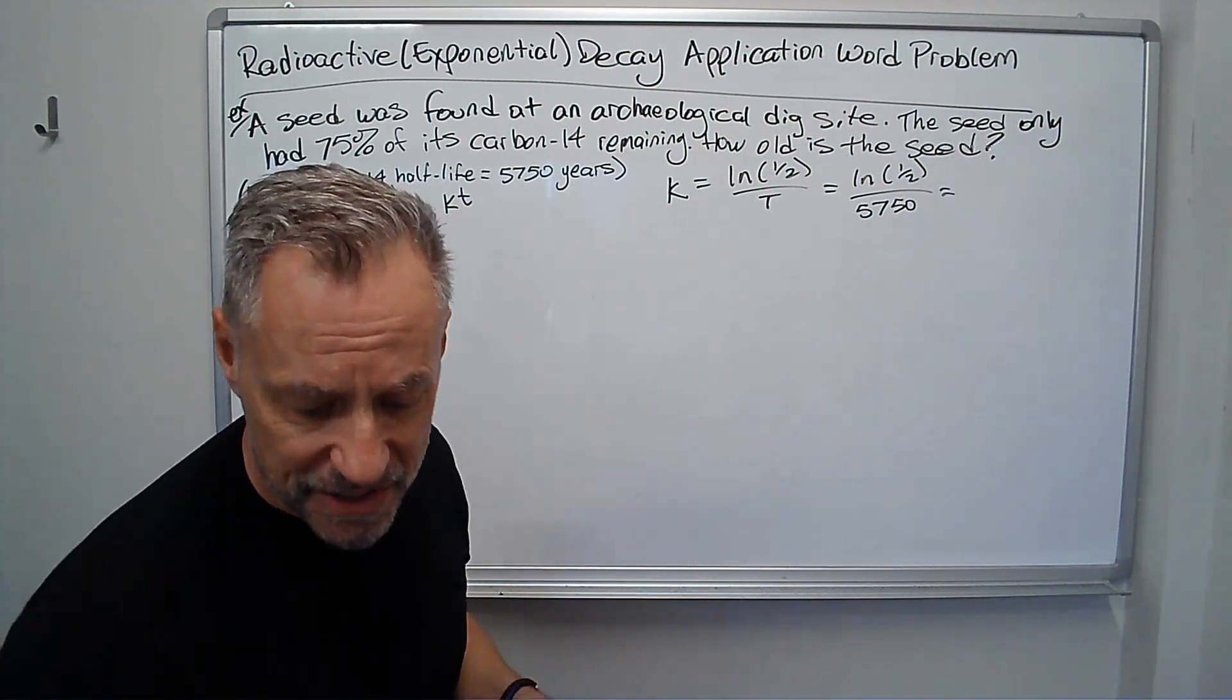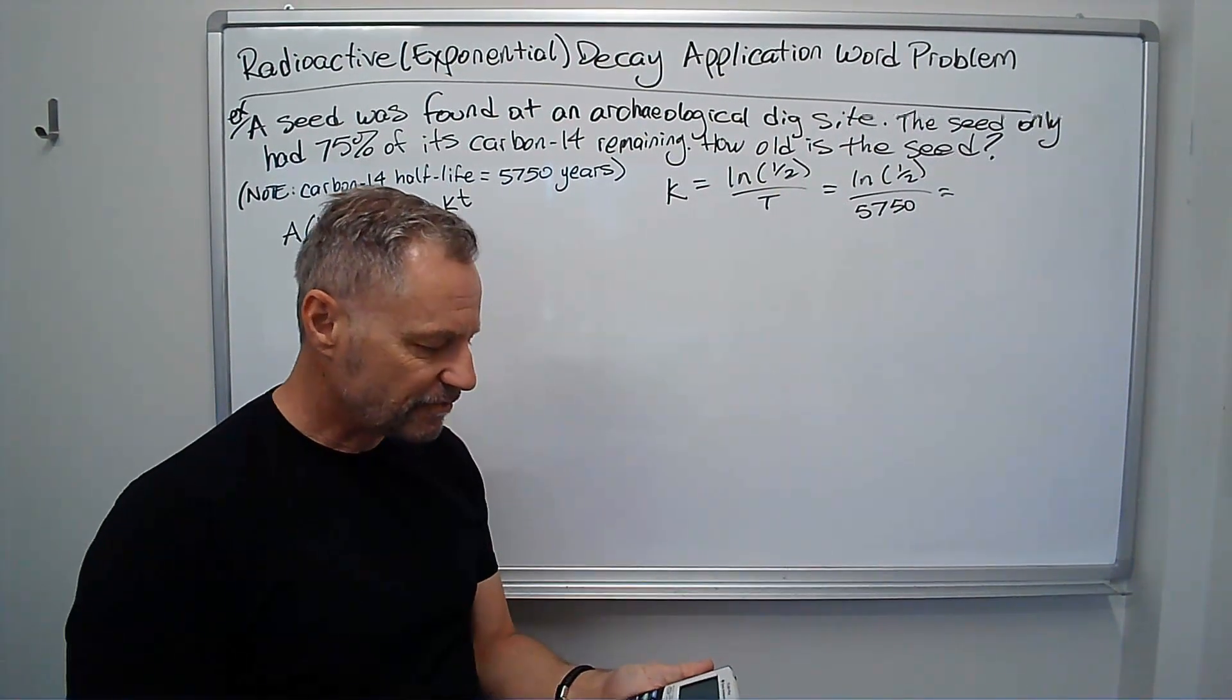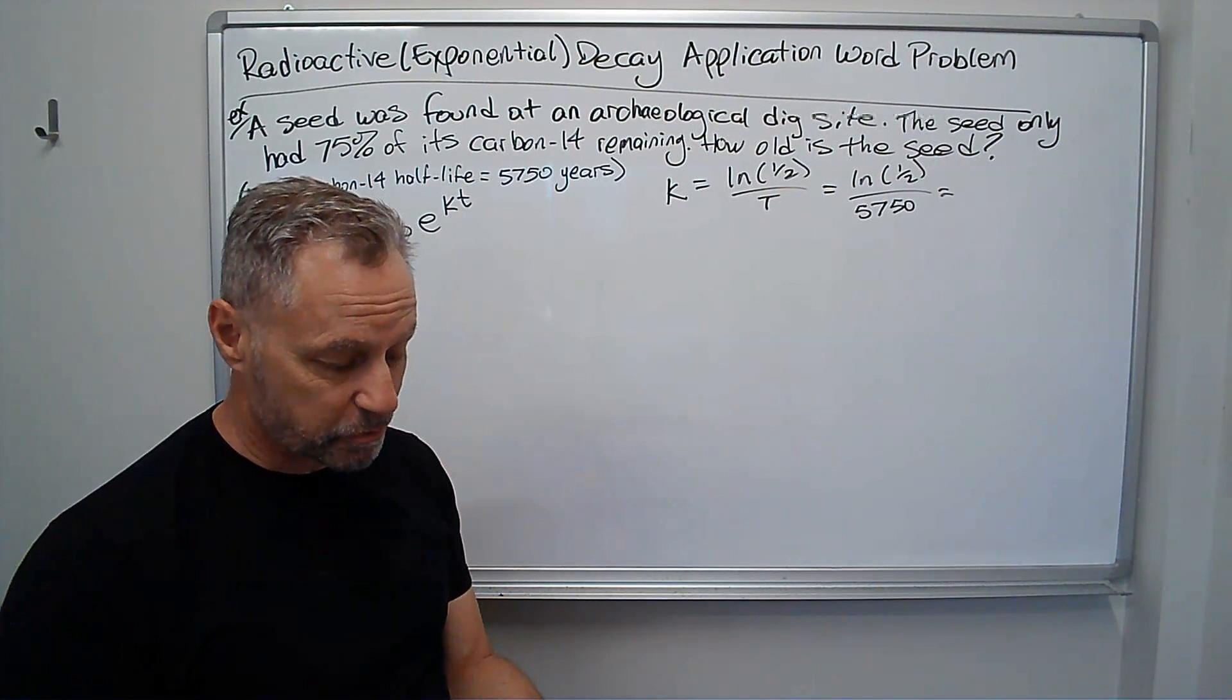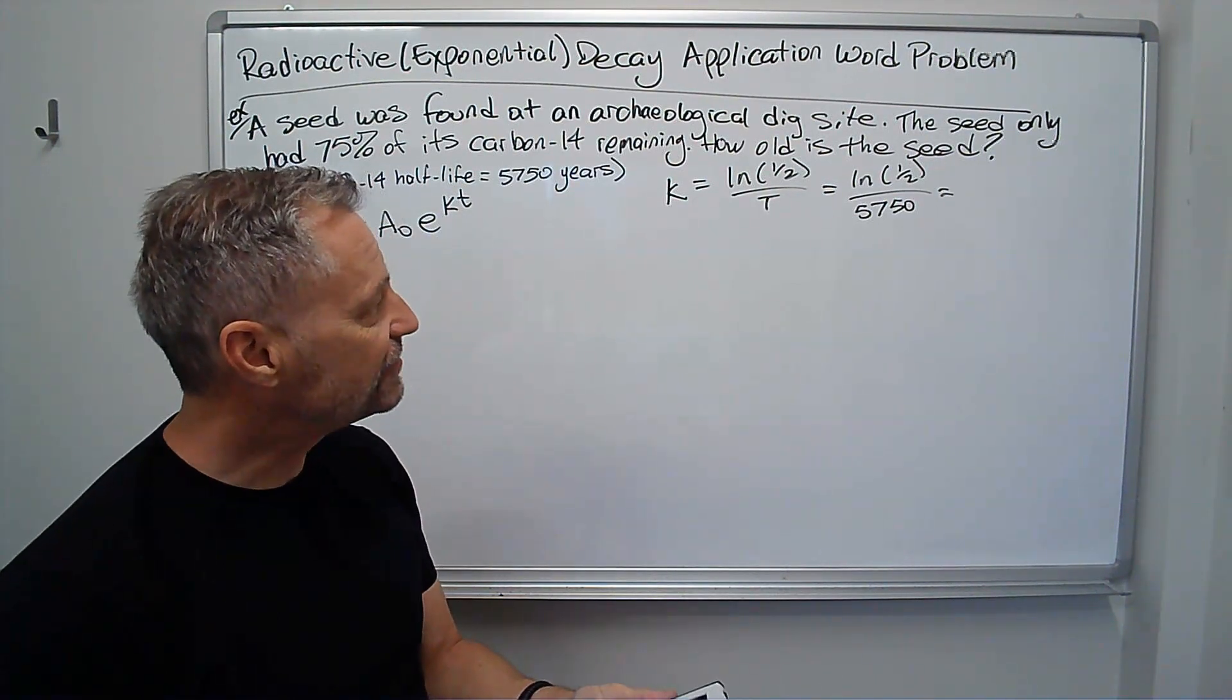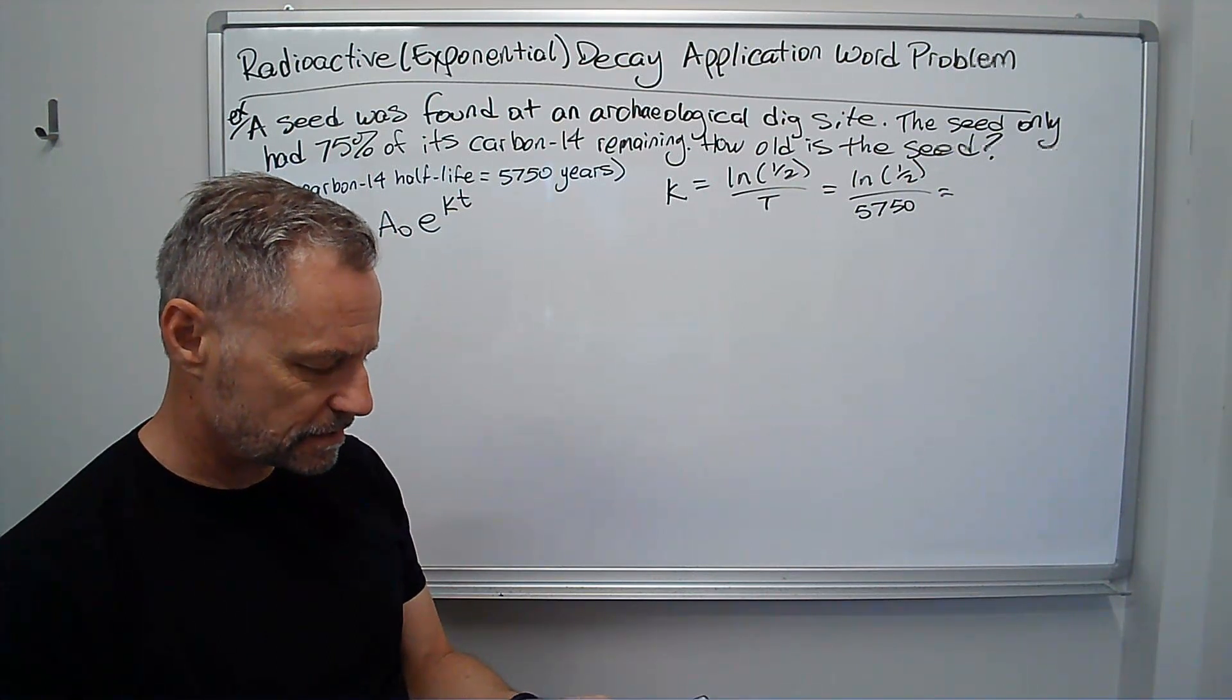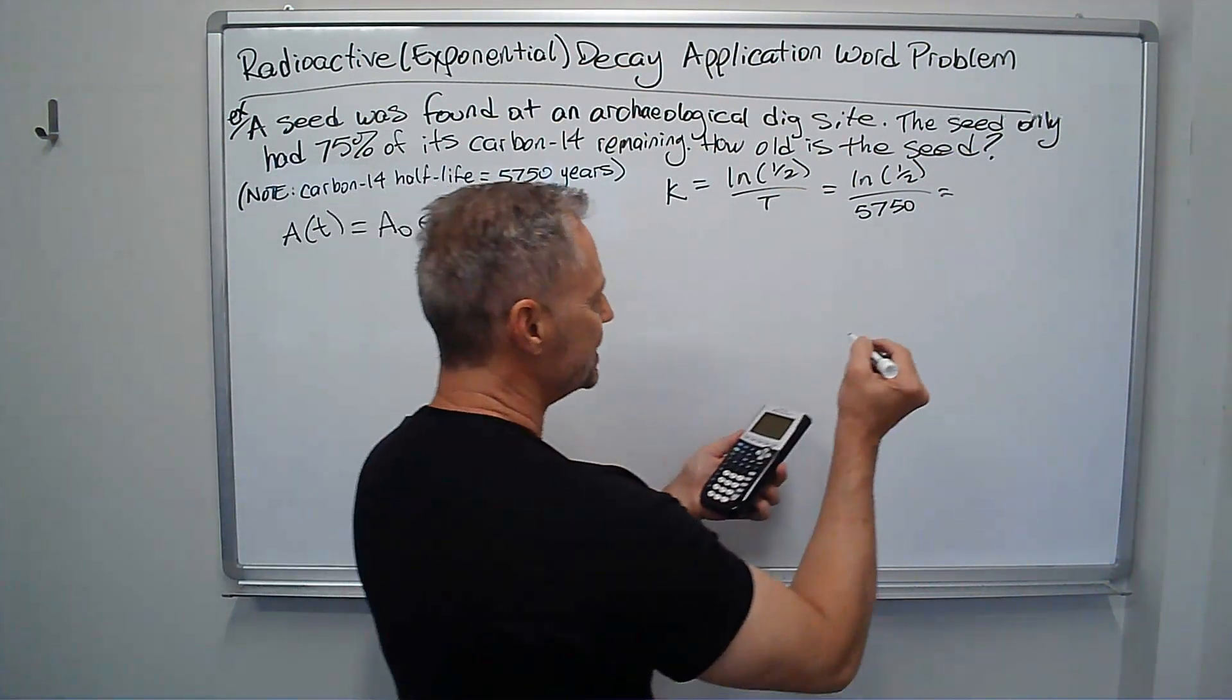And then let's plug that into the calculator and see what we get. So I get ln of 1 divided by 2, or just ln of 0.5, closed parenthesis, divided by 5750.